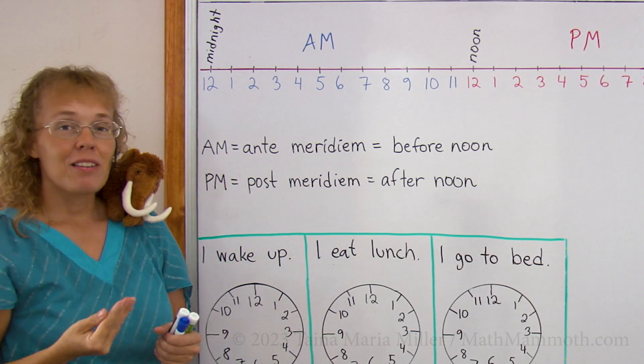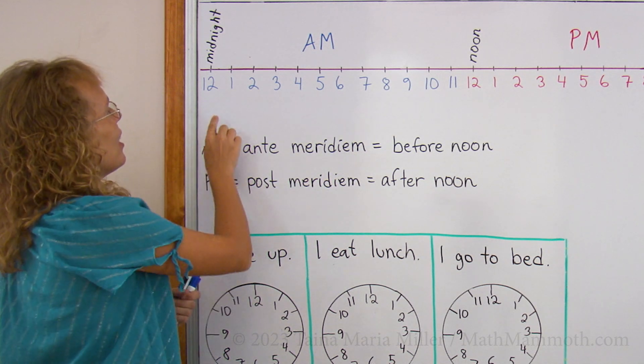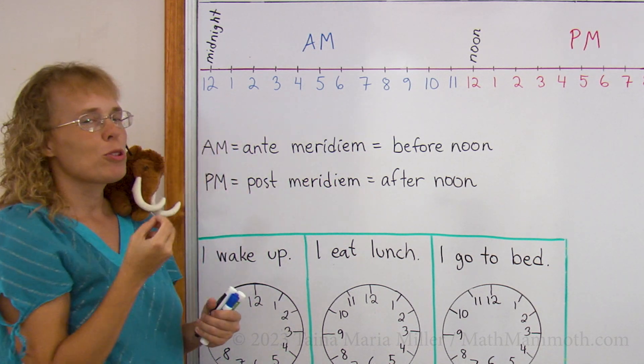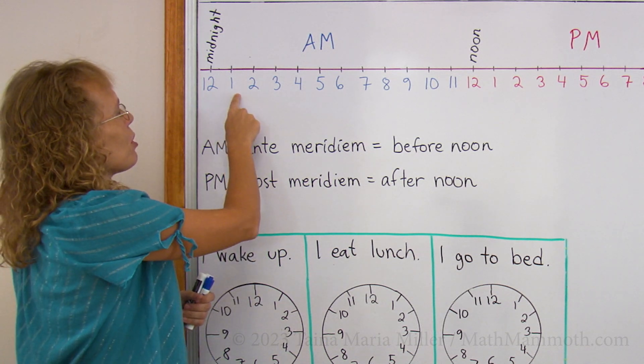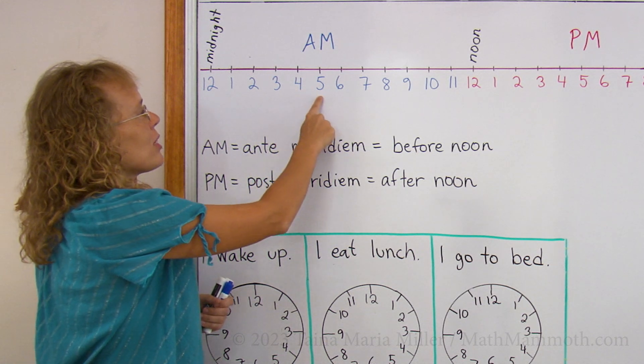It is midnight, 12 AM, or 12 midnight, you can say. And people are sleeping. Most people are sleeping. You are probably sleeping through all these hours: 1 AM, 2 AM, 3 AM, 4 AM, and so on.